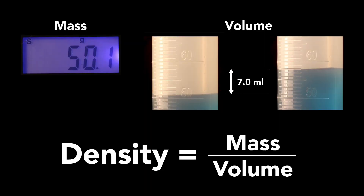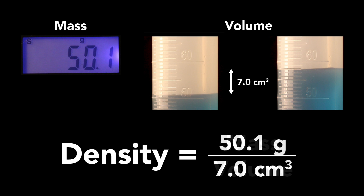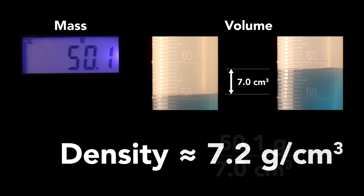Now that we know the mass and the volume, we can calculate the density of the pennies. To do that, we just divide the mass of the pennies by the volume of the pennies, which works out to be about 7.2 grams per cubic centimeter.